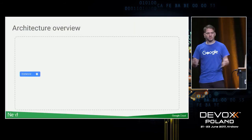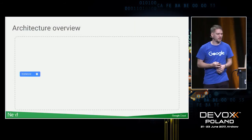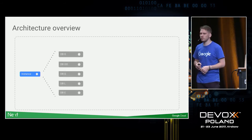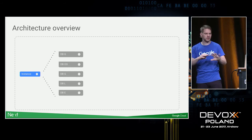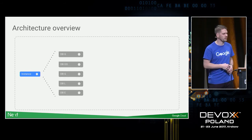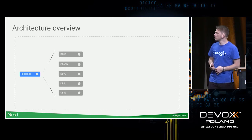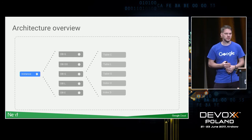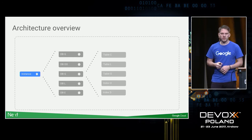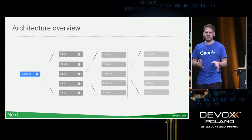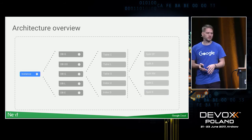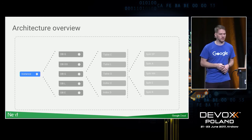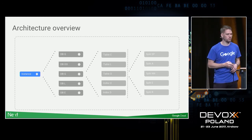In terms of the constructs in Spanner: we have an instance, and up to a couple hundred databases per instance. The instance is what I just described — the compute and storage. Each database, of course, has tables. To enable horizontal scaling, we split these tables into so-called splits, and use those splits to distribute work. I'll go into a bit more detail on this.